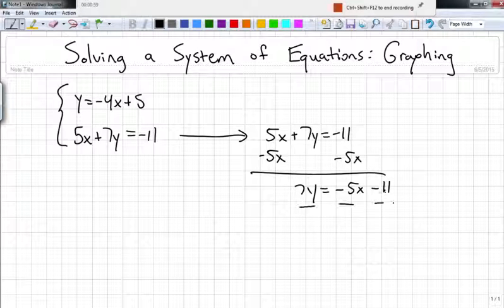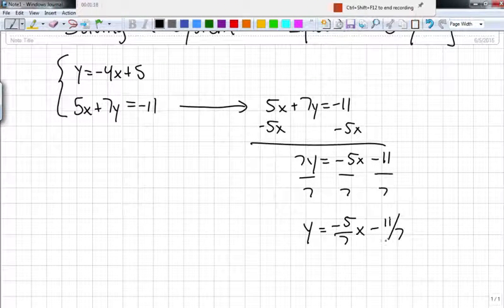And if I divide both sides by 7, I get negative 5/7 x minus 11/7. So that is not a very pretty equation to try to graph by hand because that y intercept is a little messy.